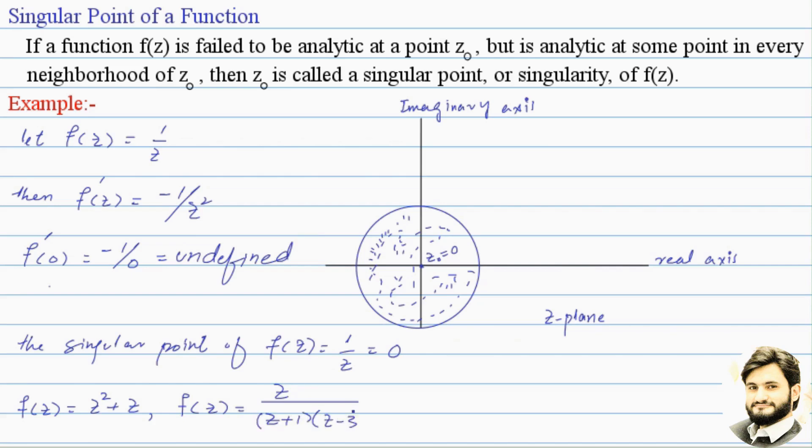Similarly, if I take f(z) = z/[(z+1)(z-3)], clearly z = -1 and z = 3 are the singular points of the function f(z).